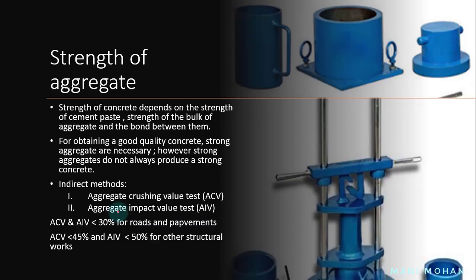Strength of aggregate: the strength of concrete depends on the strength of the cement paste, the strength of the bulk aggregate, and the bond between them. If the strength of cement paste is satisfactory, good quality concrete can be obtained provided the strength of aggregate and bond between aggregates and cement is also satisfactory. However, if the strength of paste and bond is low, a poor quality of concrete is obtained.